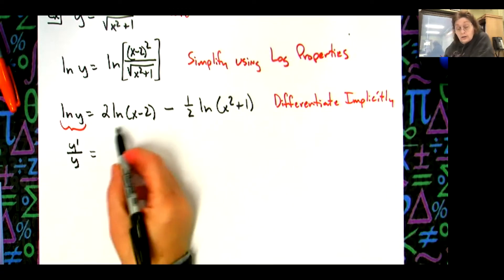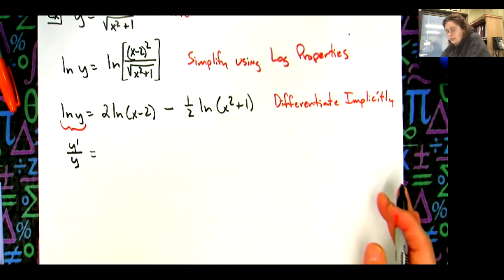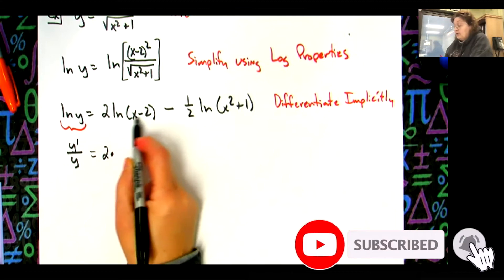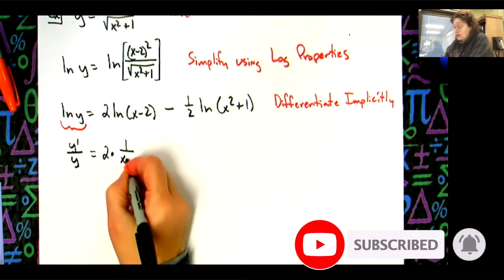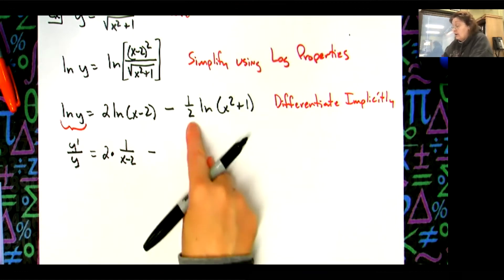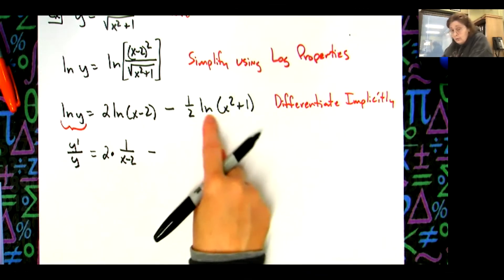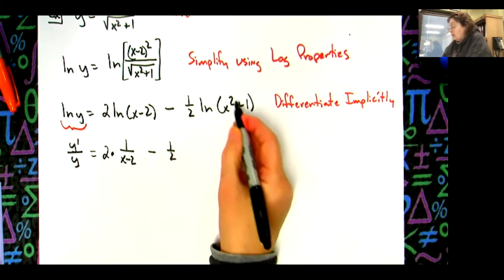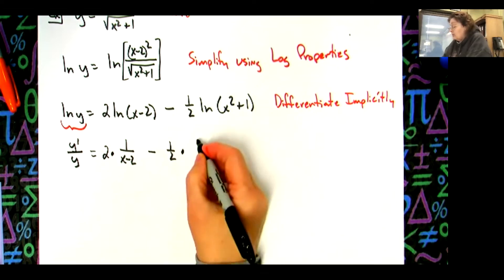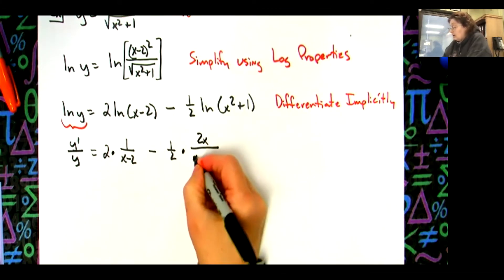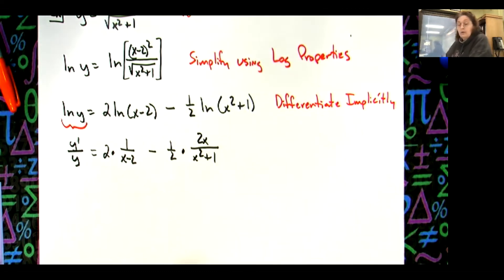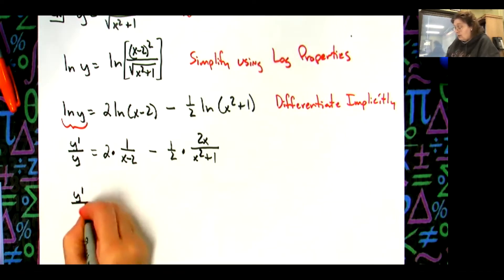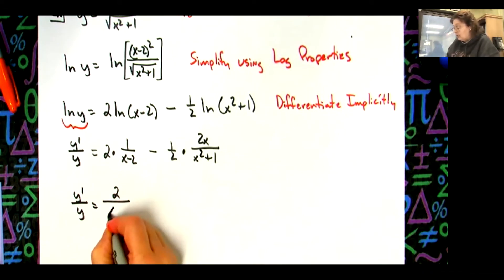This 2 in front is just the constant multiplier rule — no product rule needed. Derivative of (x minus 2) is 1, so I get 2 over (x minus 2). Then one half times the derivative of (x squared plus 1), which is 2x over (x squared plus 1). So: y prime over y equals 2 over (x minus 2) minus one half times 2x over (x squared plus 1). Look how simple that was.